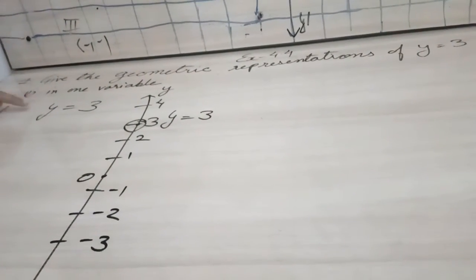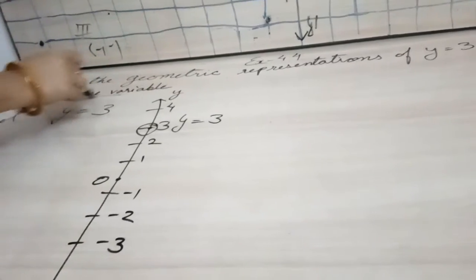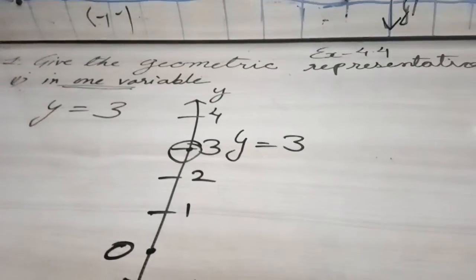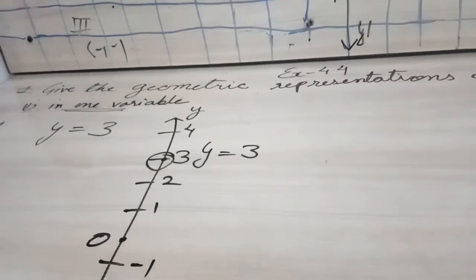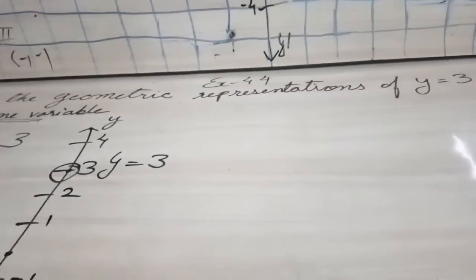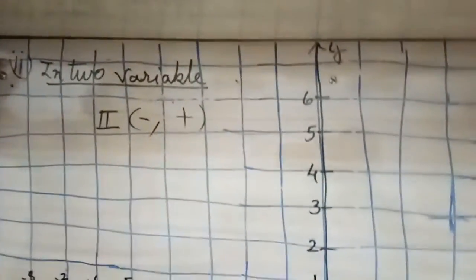So this representation is known as one variable. This representation of line we have done in a single variable. But the second part is asking us to represent in two variables. Look here on the graph, focus here.